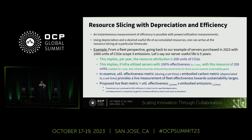Combining the two aspects: what we're proposing is a way to do resource slicing. We have instantaneous measurements of efficiency from the fleet. Using depreciation and the desired useful life of accumulated resources, one can arrive at resource slicing at a particular timescale. For example, with 1,000 units of CO2e and a service life of five years, the resource attribution is 200 units of CO2e per year. If the infrastructure utilized all these servers at 100% effectiveness for one year, we have reached the theoretical maximum that could have been done with those accumulated resources.